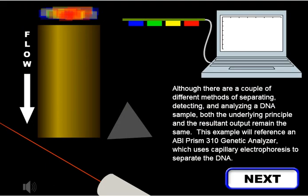Although there are a couple of different methods of separating, detecting, and analyzing a DNA sample, both the underlying principle and the resultant output remain the same. This example will reference an ABI Prism 310 genetic analyzer, which uses capillary electrophoresis to separate the DNA.